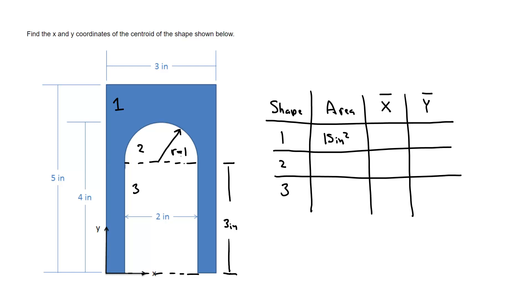For shape 2, it is a semicircle radius of 1 inch, so pi r squared would be a full circle, one half pi r squared would be the half circle. It's a cutout so it's going to be negative area, so negative 1.57 inches squared.